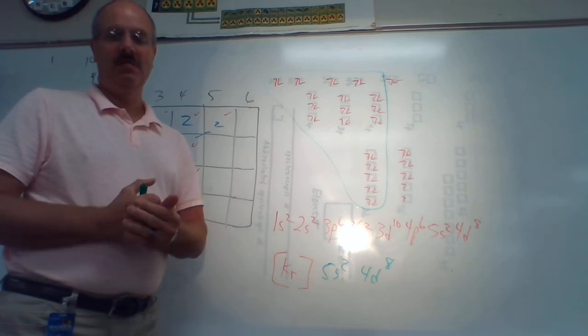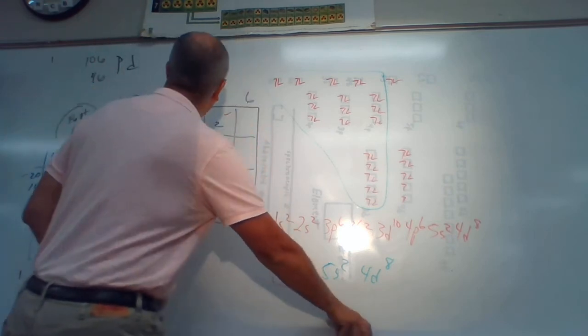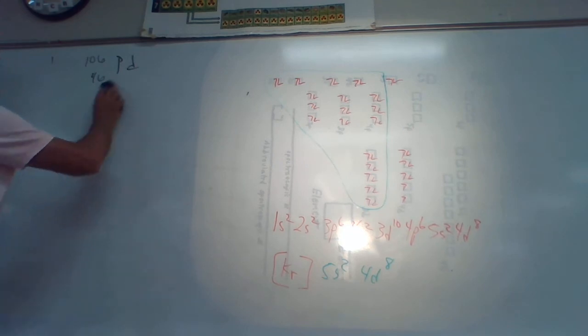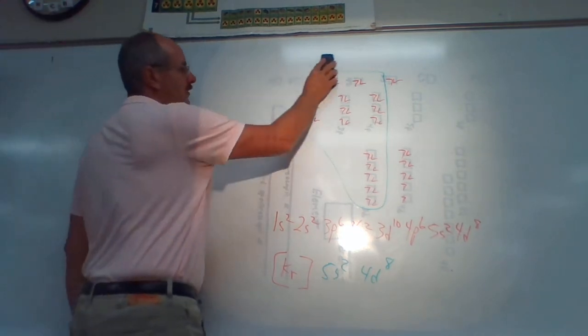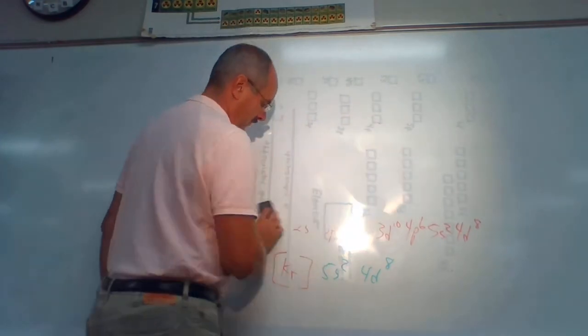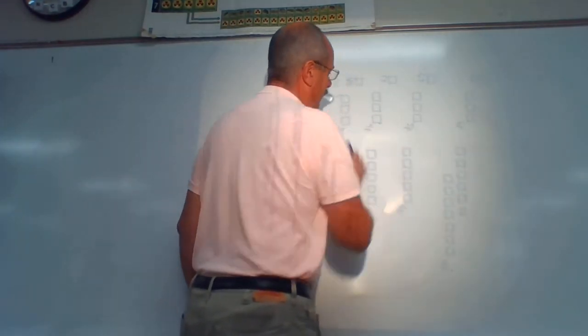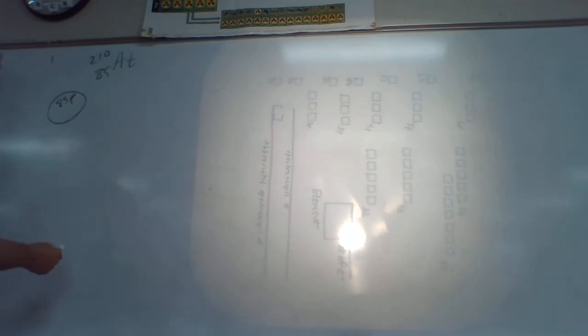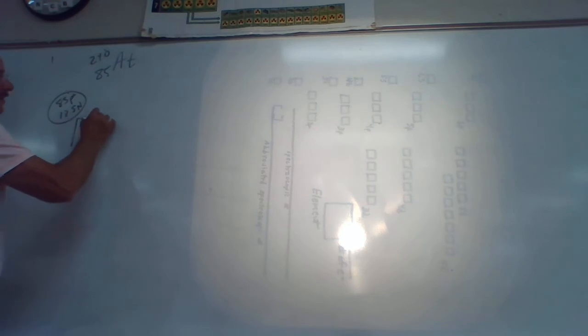Now we have to do astatine (At), so let's erase some of this. For At, the atomic number is 85 — holy mackerel, that's a lot — and the mass is 210. In the nucleus we have 85 protons, and subtracting gives us 125 neutrons. Then we've got to do our Niels Bohr model.